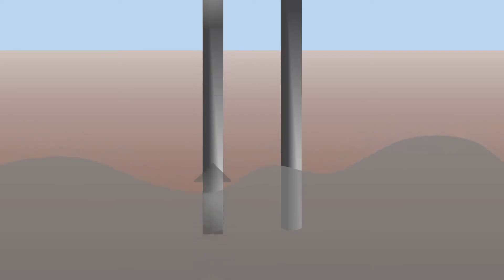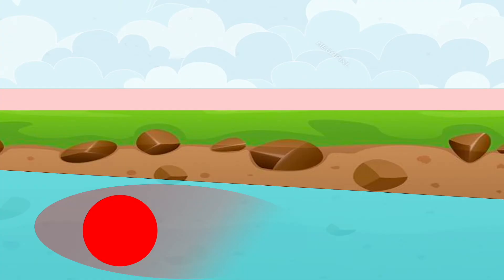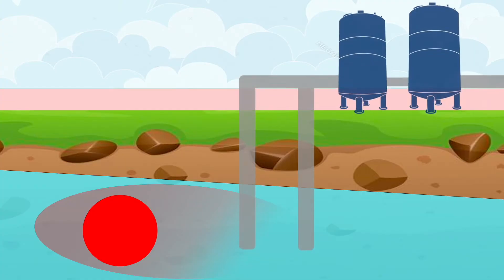Pump and treat methods may involve installing one or more wells to extract the contaminated groundwater. Groundwater is pumped from these extraction wells to the ground surface, either directly into the treatment system or into a holding tank until treatment can begin.